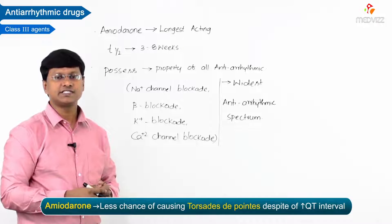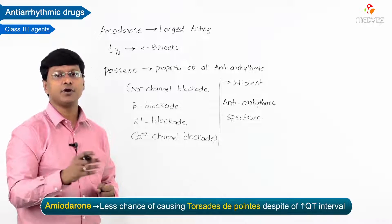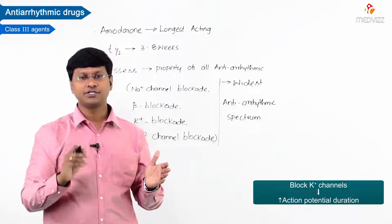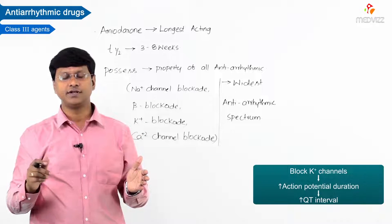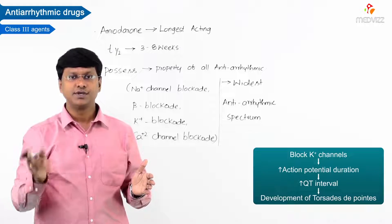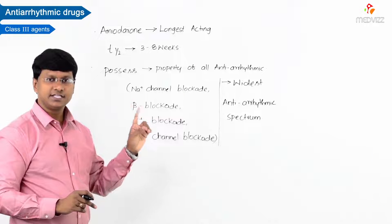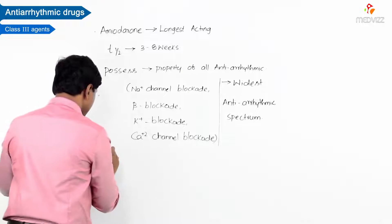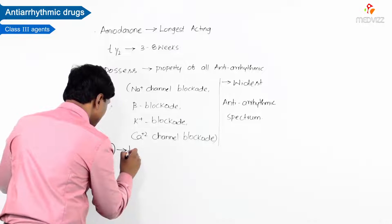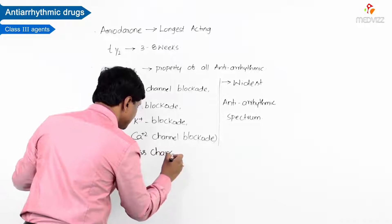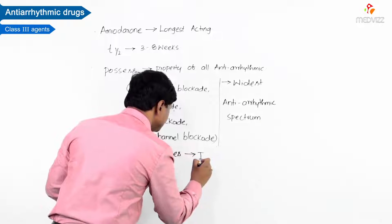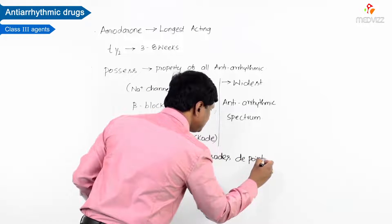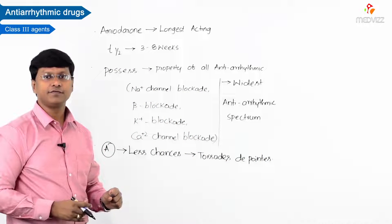Another important point is that amiodarone carries less chances of causing torsades de pointes, despite prolongation of the QT interval. These drugs block potassium channels, prolonging action potential duration and QT interval, which normally leads to torsades — but amiodarone has less risk of this.